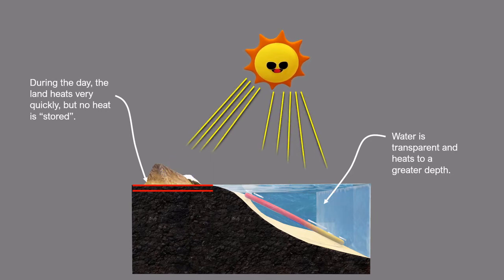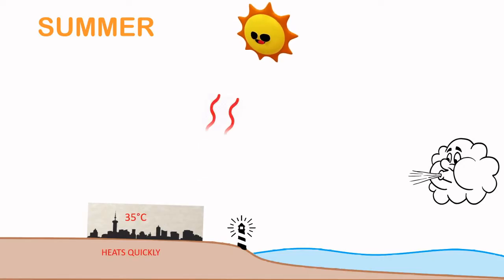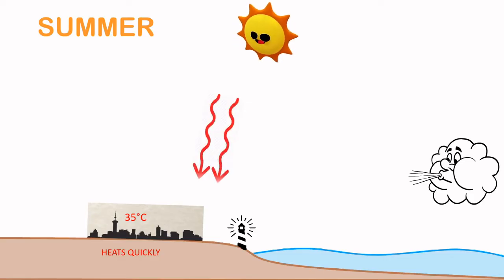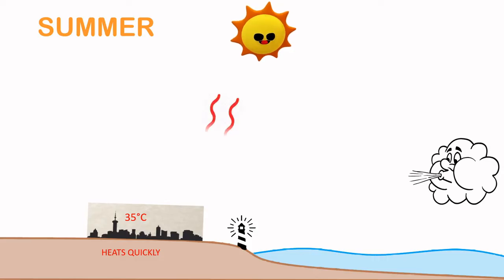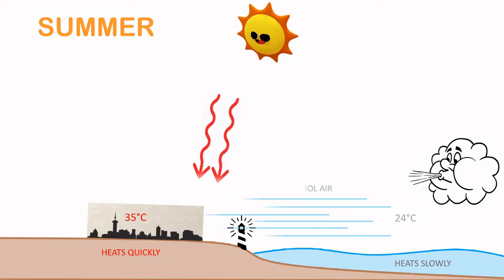Because air over the land heats very quickly, and especially in summer, temperatures climb fast and can often go well into the 30s. Therefore, in summer, when the temperatures rise quickly over the land, the air over the oceans, which is cooler because the ocean heats more slowly, blows over the land, preventing the coastal temperatures from rising too high.